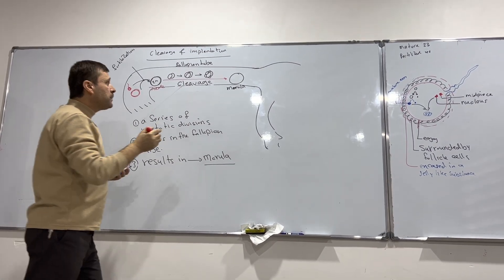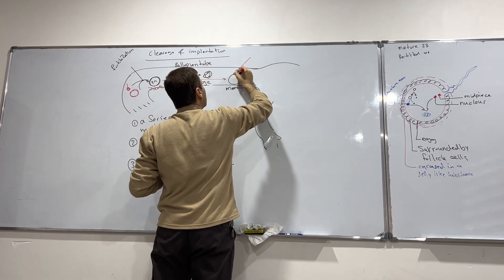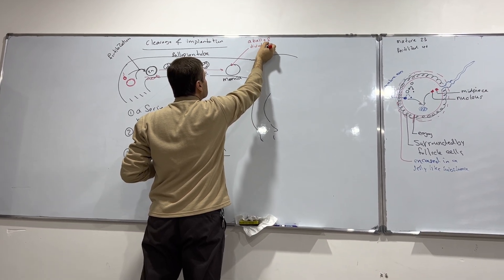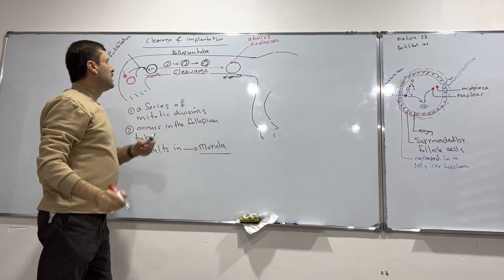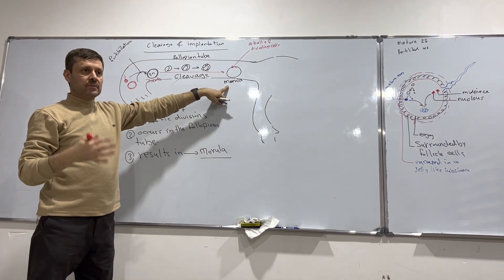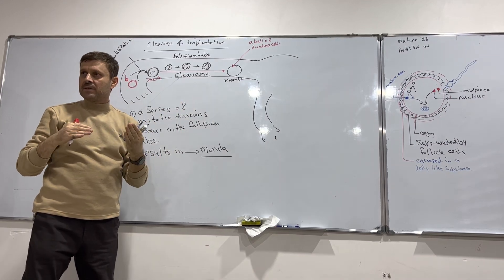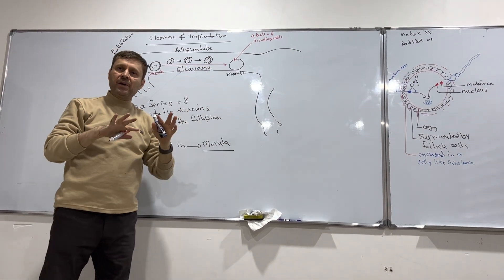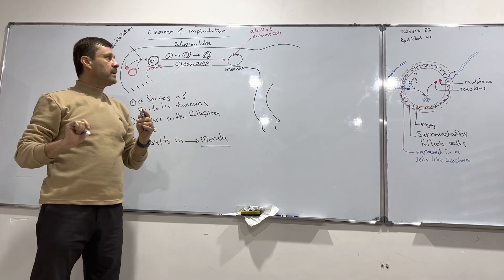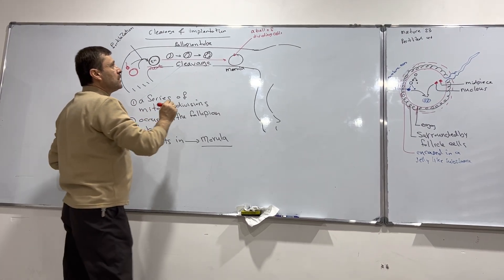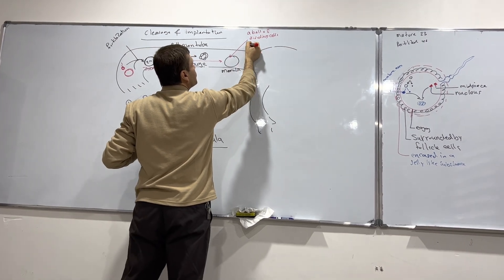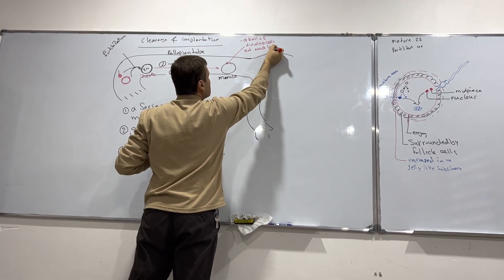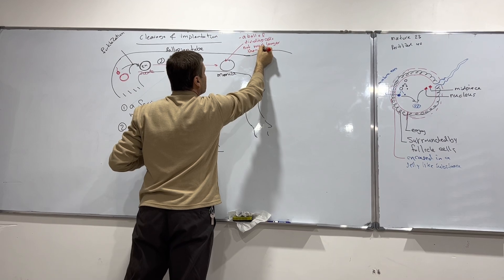What about the morula? Morula is a ball of dividing cells — about 16 to 32 cells. The morula is not much larger than the zygote.